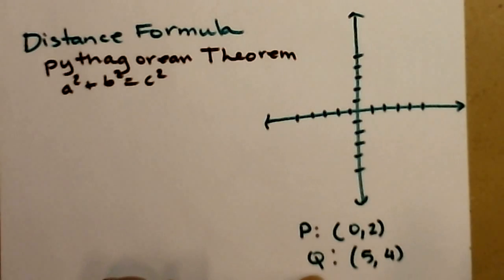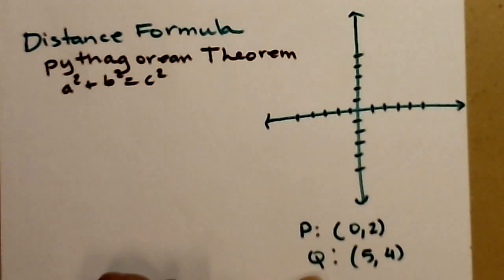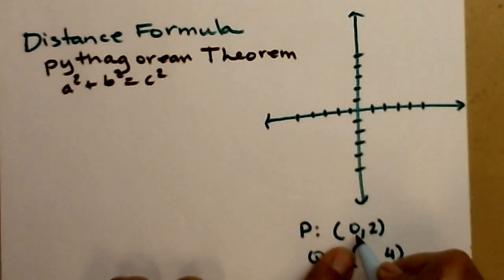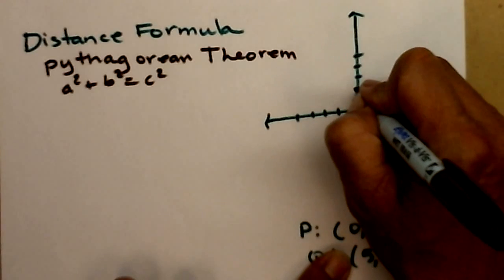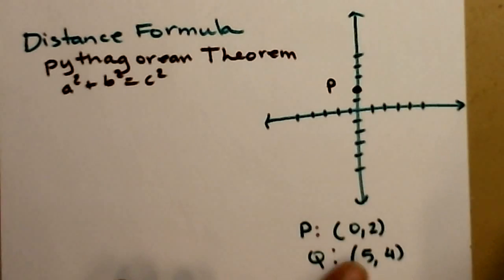So I have two new points now, P and Q. So we'll go ahead and plot those. So P is at the point 0, 2. So 0 in the x direction. So don't go left or right. Just stay on the origin. And then up 2. So there's point P.